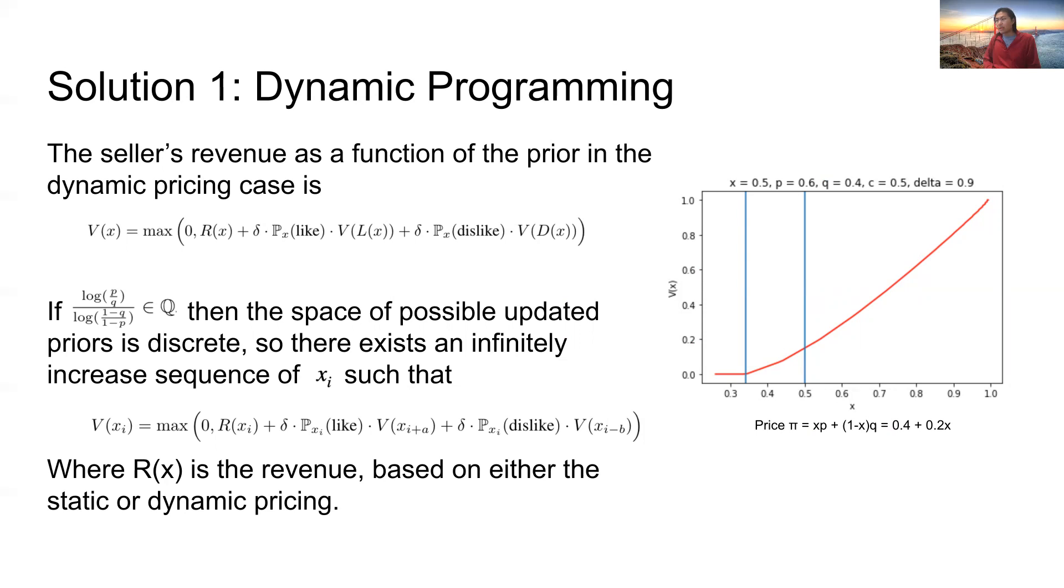In the diagram on the right, we show an example where your P is 0.6, your Q is 0.4, your cost C is 0.5, and your delta is 0.9. And we show, interestingly, that your X star at around 0.33 is much lower than when the local reward is 0 at when X equals 0.5. We see that in the range between these two priors, your expected revenue is positive, even though selling a single product at that prior may have a negative revenue.